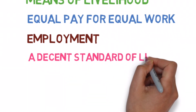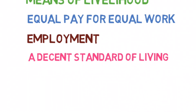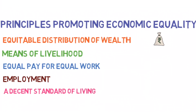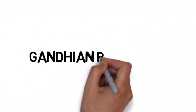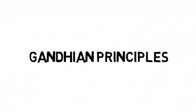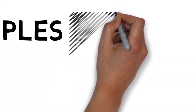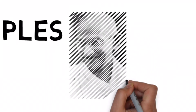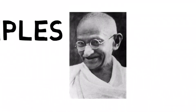So these were the principles put under the first category, which the governments have been suggested to incorporate for the welfare of the people. During the freedom movement, Mahatma Gandhi had worked out a plan for social development, and some of his ideas were included as directive principles.